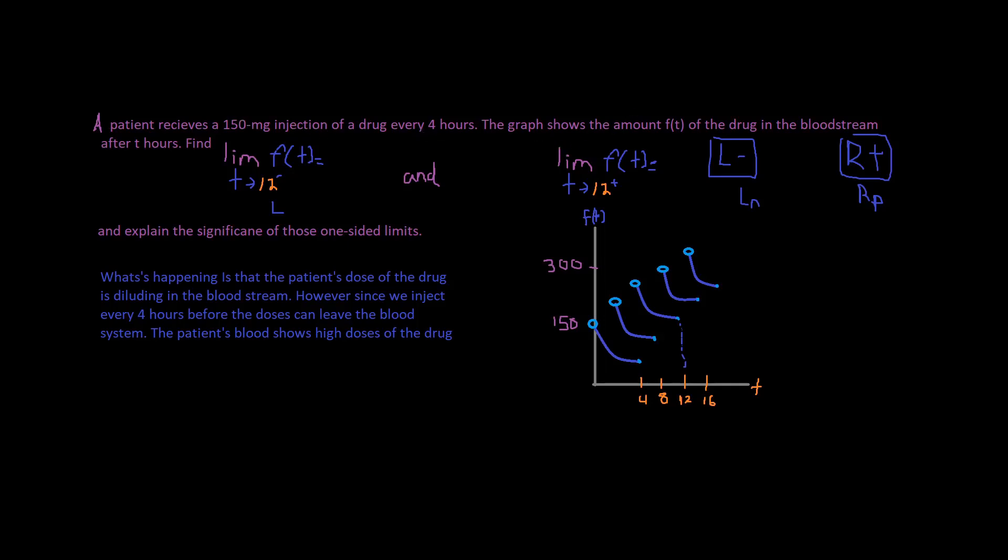A good indication to remember which side is which side: we put L minus, which means left-hand side is negative, which stands for LN, and R positive, which means RP, right-hand side is positive. That's a good mnemonic to remember which side is which.